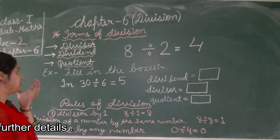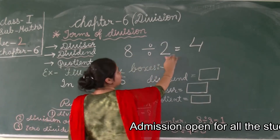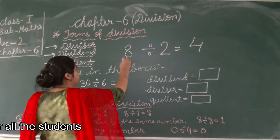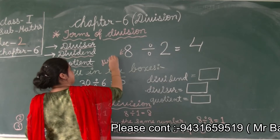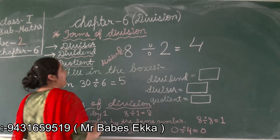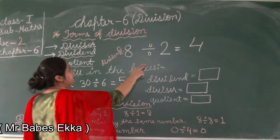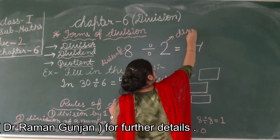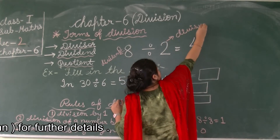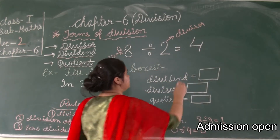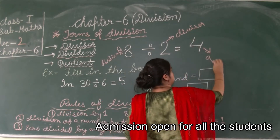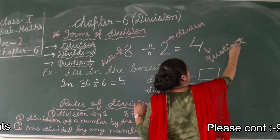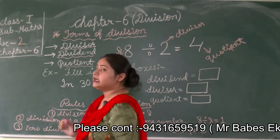For example, in 8 divided by 2 equals 4: here the number 8 is being divided, so 8 will be termed as the dividend. And 2 is the number from which 8 is being divided, so 2 is termed as the divisor. The result of our division, which is 4, is termed as the quotient.